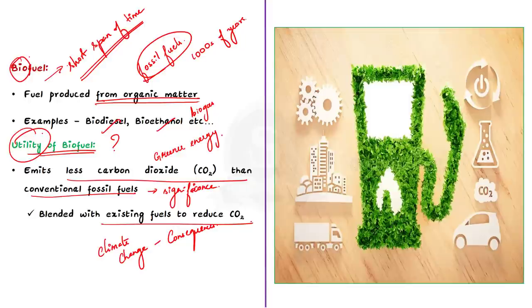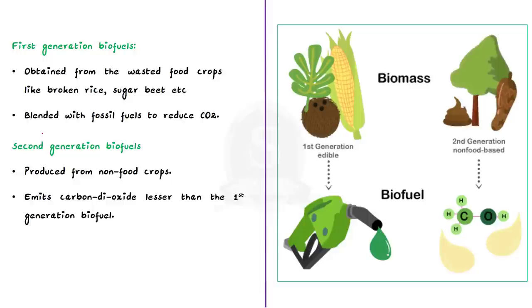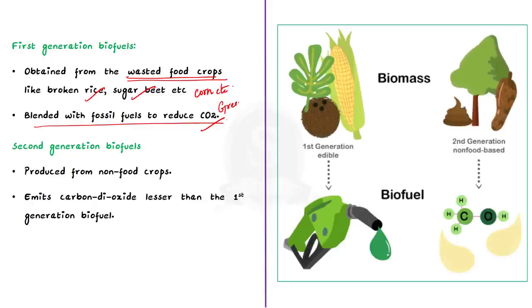Let us move on to the categorization of biofuel into four generations. First generation biofuels are usually obtained from wasted food crops like broken rice, rice shell, and sugar beet. They are generally blended with fossil fuels to reduce the amount of greenhouse gases when the fuel is burnt. Second generation biofuels are produced from non-food crops — inedible energy crops which emit carbon dioxide less than first generation biofuels.